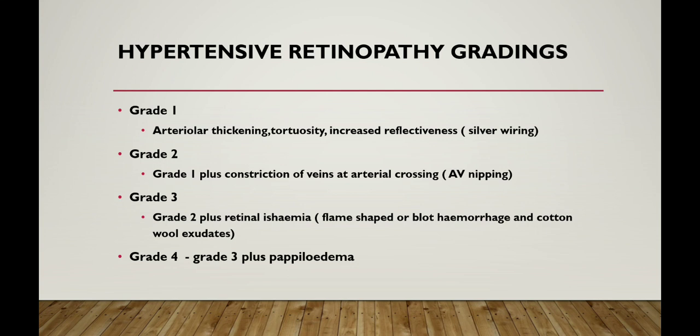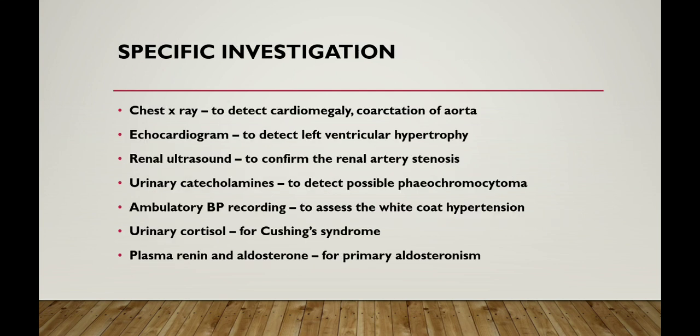Coming to grading of hypertensive retinopathy — there are four grades. Grade 1 includes arteriolar thickening, tortuosity, and increased reflectiveness called silver wiring. Grade 2 includes Grade 1 plus constriction of veins at arterial crossings, called AV nipping. Grade 3 includes Grade 2 plus retinal ischemia; ophthalmoscopy shows blot hemorrhages and cotton wool exudates. Grade 4 includes Grade 3 plus papilledema.